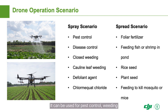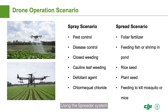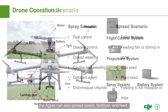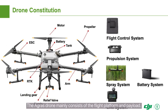It can be used for pest control, weeding, and spraying foliar fertilizers and defoliant. Using the spreader system, the Agris can also spread seeds, fertilizer, and feed.